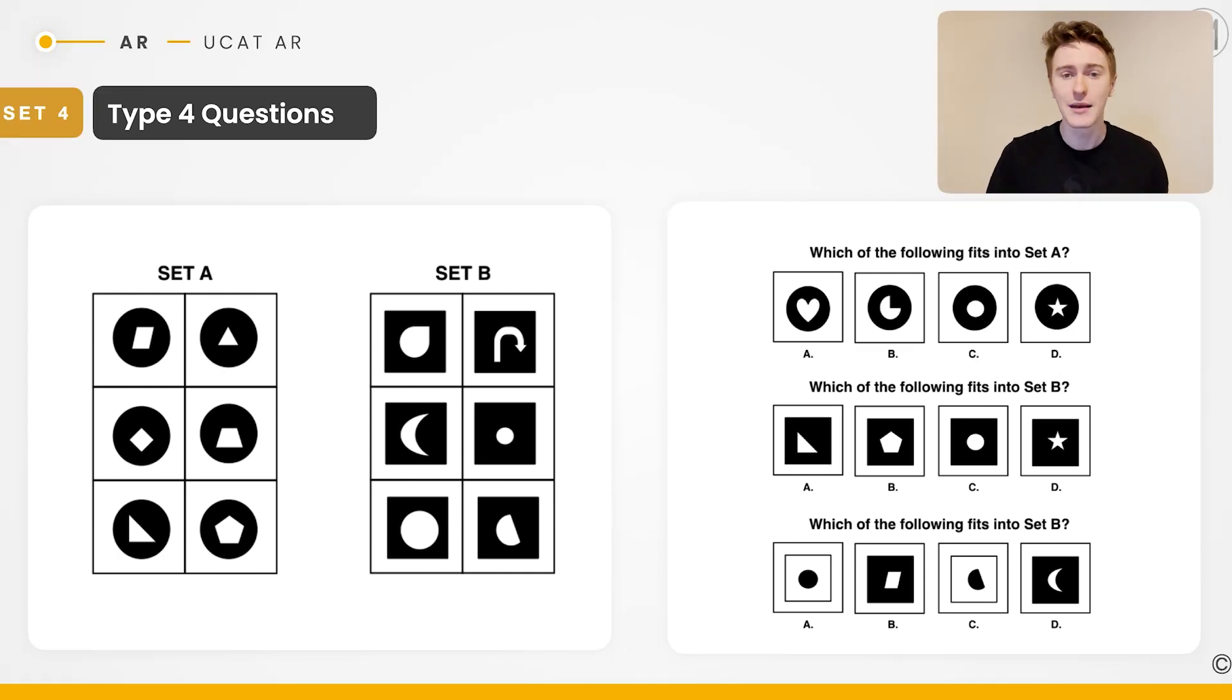Here you can see we've got set A and set B, much like type one questions. But if we look at where we can put our answers, we're actually given a slightly different kind of question. Rather than being given individual test shapes and asked whether they belong to set A, set B or neither, we're asked which one of these belongs to set A. The same principles apply though. We've still got to find the pattern first.